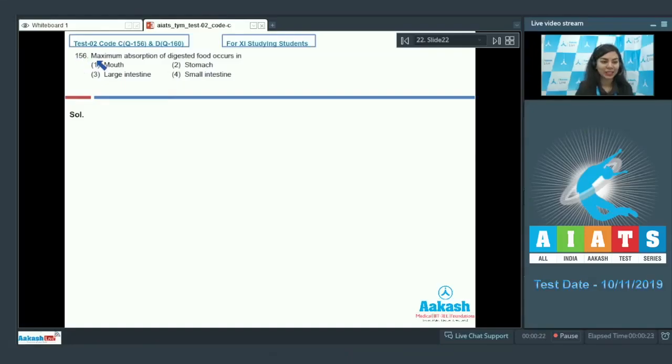Question number 156: Maximum absorption of digested food occurs in mouth, stomach, large intestine, or small intestine? The answer is in small intestine.